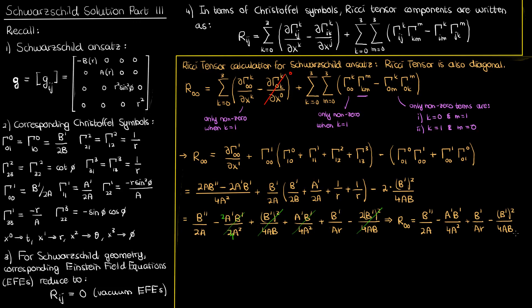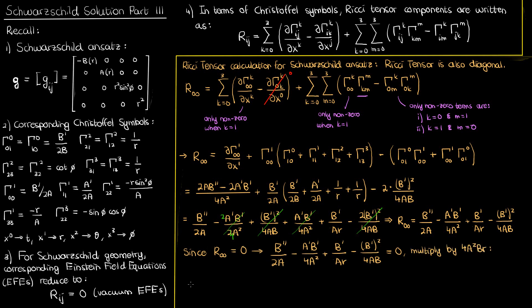Capital A and capital B are exclusively functions of the radial coordinate r, and their primes denote derivatives with respect to r. This Ricci tensor component, like all the others, has to satisfy the vacuum Einstein field equation, so R₀₀ must equal zero. Setting it to zero and multiplying both sides by the common denominator 4a²r gives us the following equation corresponding to the zero-zero component of the Ricci tensor. I'll call this equation zero.